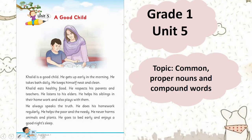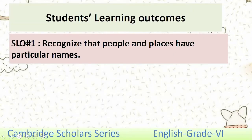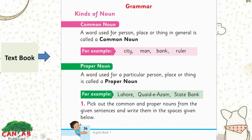We are going to start our lesson from Unit 5: A Good Child. Our topic is common nouns, proper nouns, and compound words. The SLO of this lesson is to recognize that people and places have particular names. In this lesson we are going to discuss the kinds of noun — the common noun and the proper noun.